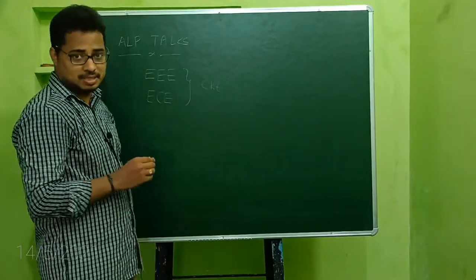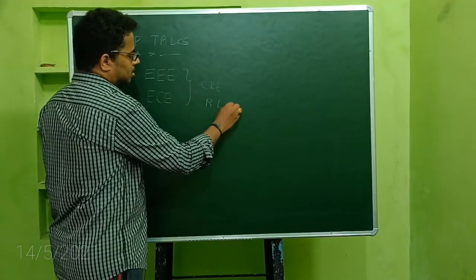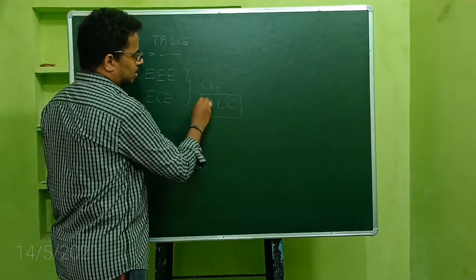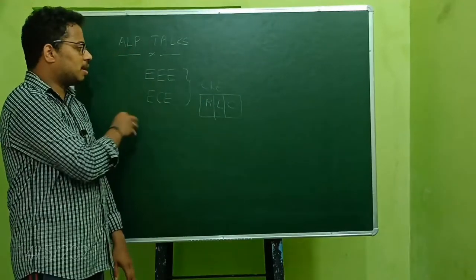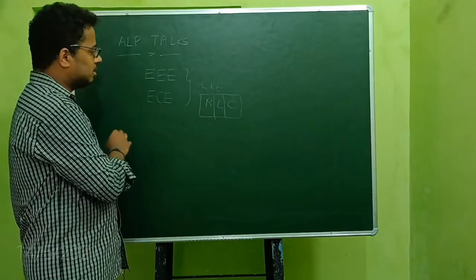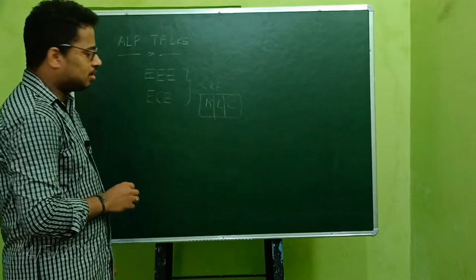Mainly resistor, inductor, capacitor - whatever these things are involved, RLC elements we will say. Those are circuit branches. These things we are going to study and discuss a lot.